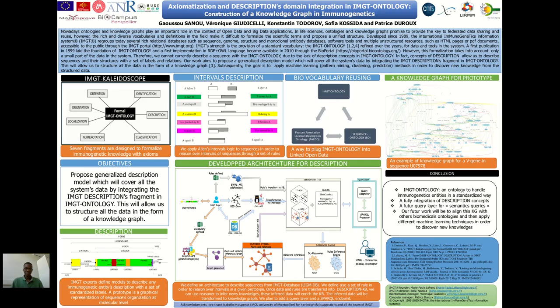The end goal of this architecture is to also facilitate queries and information retrieval. We plan to add a query layer for that, and a user can interact with this query layer. Here, we represent a knowledge graph for the prototype vision in the sequence U0 or 7978. The color coding is relative to colors in Allen's interval logics.